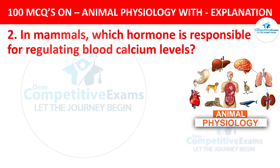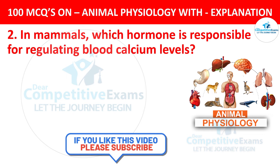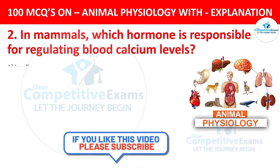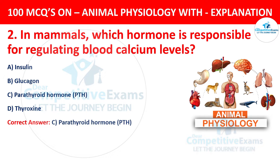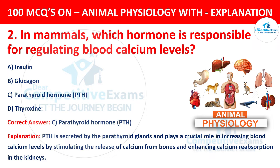Question number 2. In mammals, which hormone is responsible for regulating blood calcium levels? The options are insulin, glucagon, parathyroid hormone (PTH), or thyroxine. The correct answer is C, parathyroid hormone (PTH). PTH is secreted by the parathyroid glands and plays a crucial role in increasing blood calcium levels by stimulating the release of calcium from bones and enhancing calcium reabsorption in the kidneys.